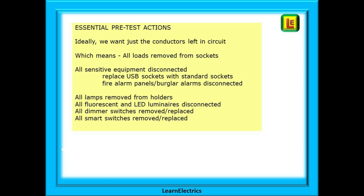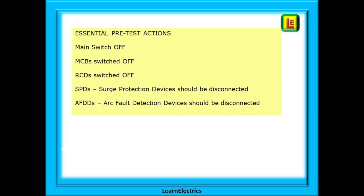This is all part of the testing setup and part of our job. If testing a whole property, the main switch must be off. All MCBs should be switched off so that they do not get secondary current paths. Turn all RCDs to off to prevent damage to them. SPDs — surge protective devices — are the same; they should be disconnected to prevent damage. And AFDDs, or arc fault detection devices, should also be disconnected for the same reasons.